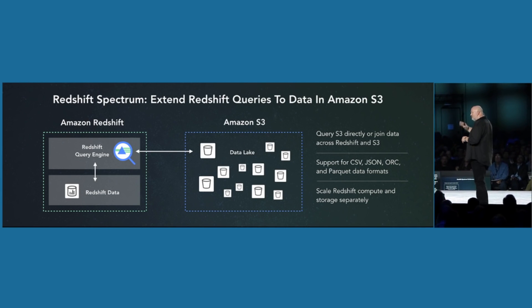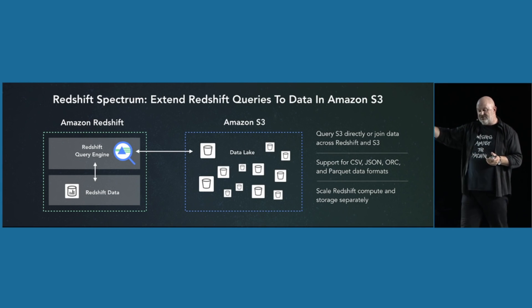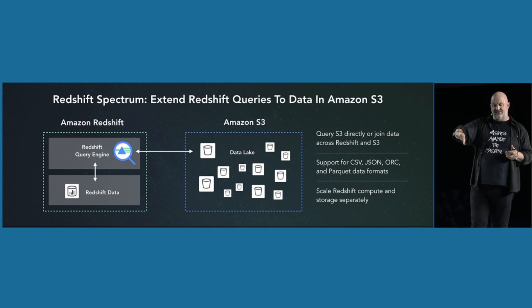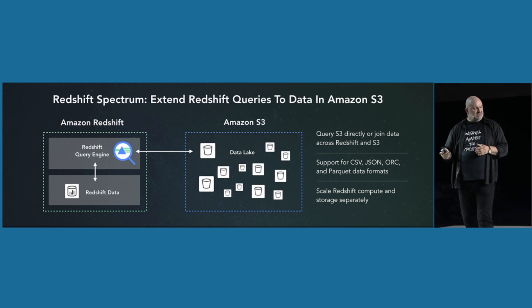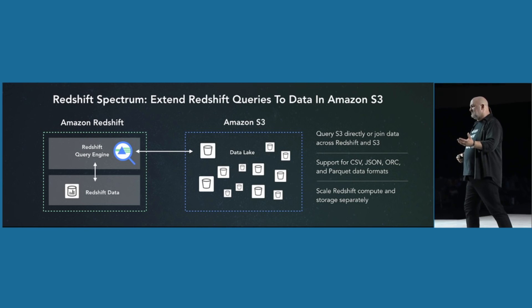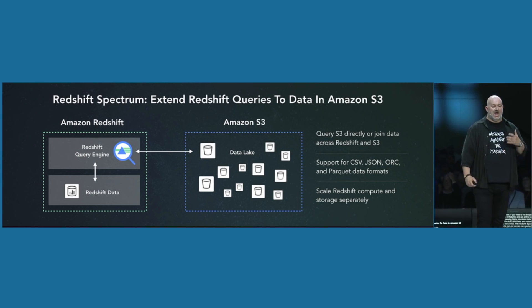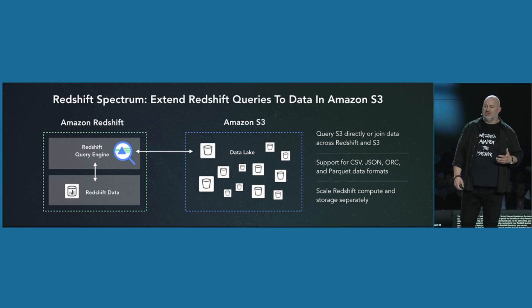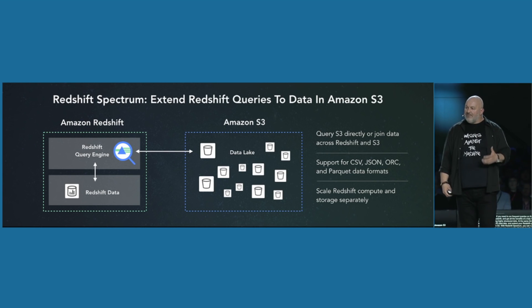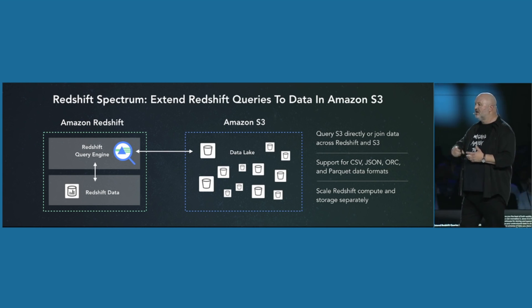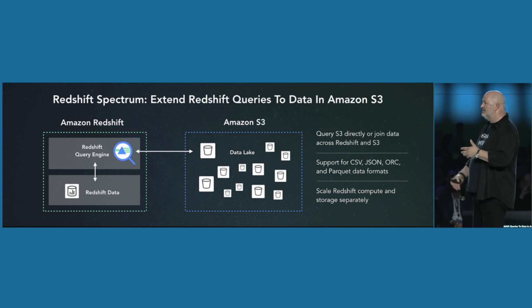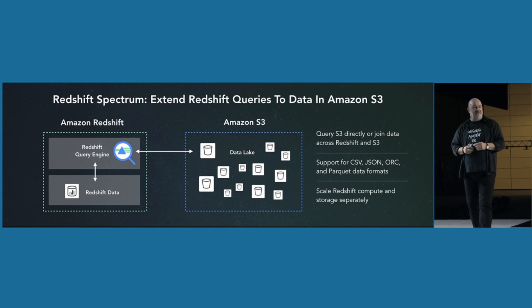You can actually extend Redshift queries and point them to data in S3. Of course, you have to register your data sources living in S3 with the Glue data catalog. If you do that, you can inside Redshift build queries that point to external tables that live in S3, and without any changes actually run complex data warehouse queries where most of the data lives in S3 and the other data lives in Redshift itself.